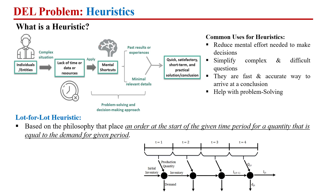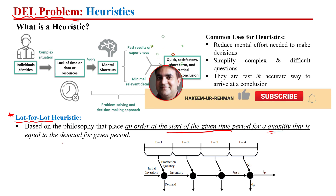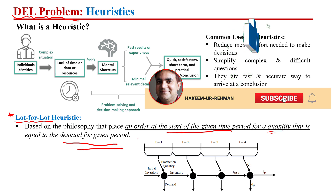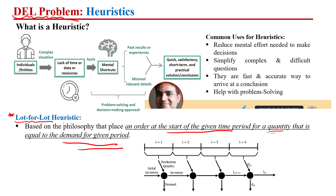Welcome. In this video lecture, we are going to discuss how we can solve the dynamic lot sizing problem using a very simple heuristic which is known as lot for lot. The idea behind this heuristic is that we are going to place the order at the start of any given period and the quantity we are going to order must be equal to the demand of that time period.